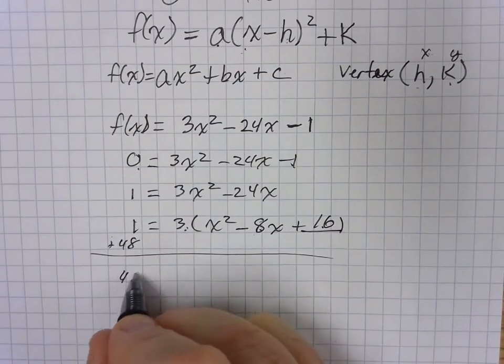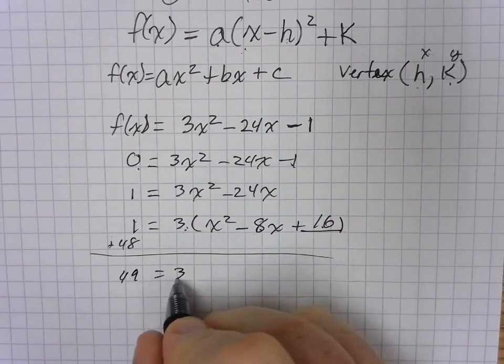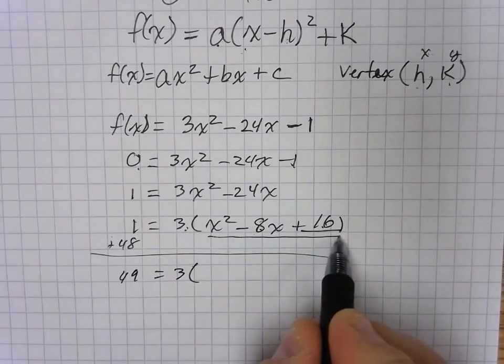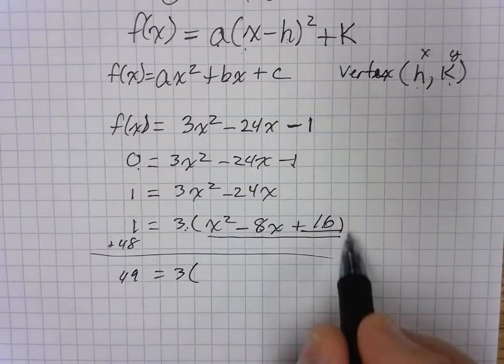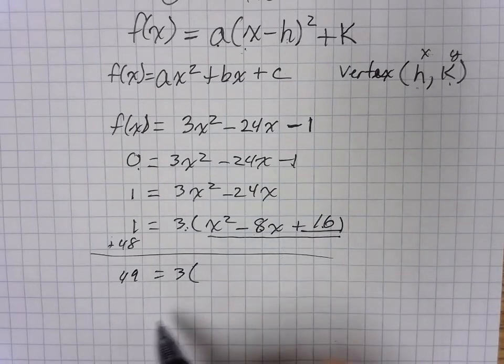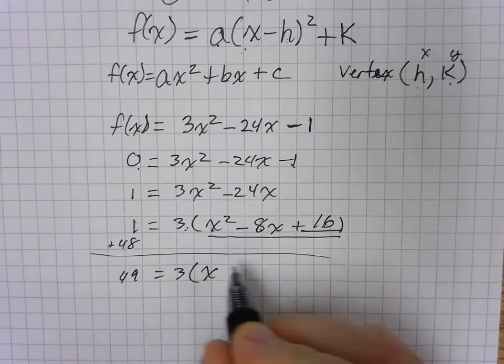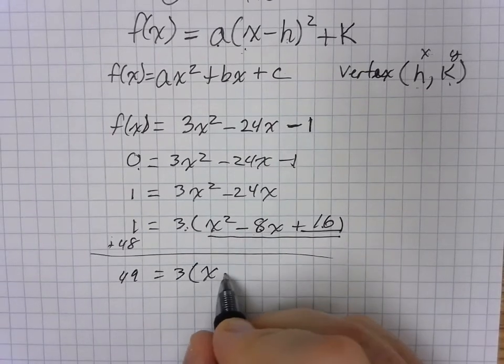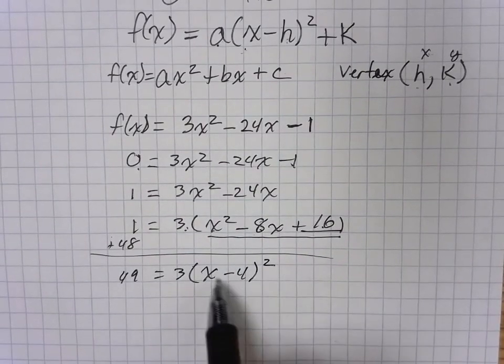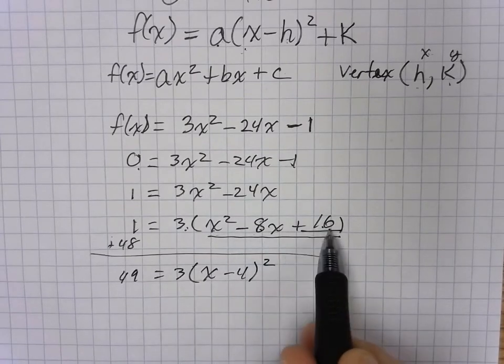And we'll bring that down as 49 equals 3 times. And now we're going to take this and put it back in its factor form. Remember, this is a perfect square trinomial. So it always factors back into a binomial squared. So we'll take the square of the first one, which is x. Half of this middle term, which is going to be negative 4 squared. So if we were to foil this out, it would give us that back again.